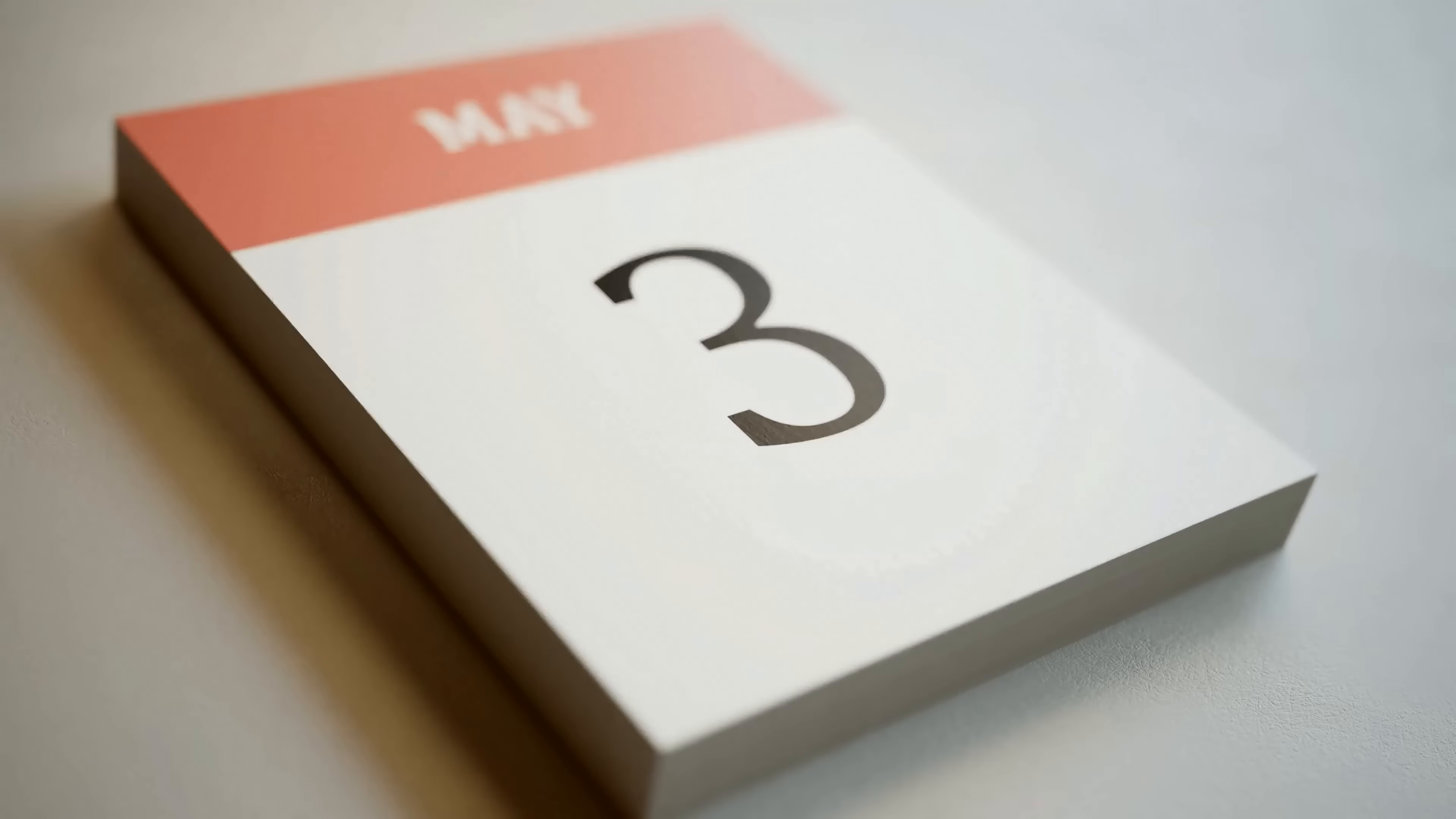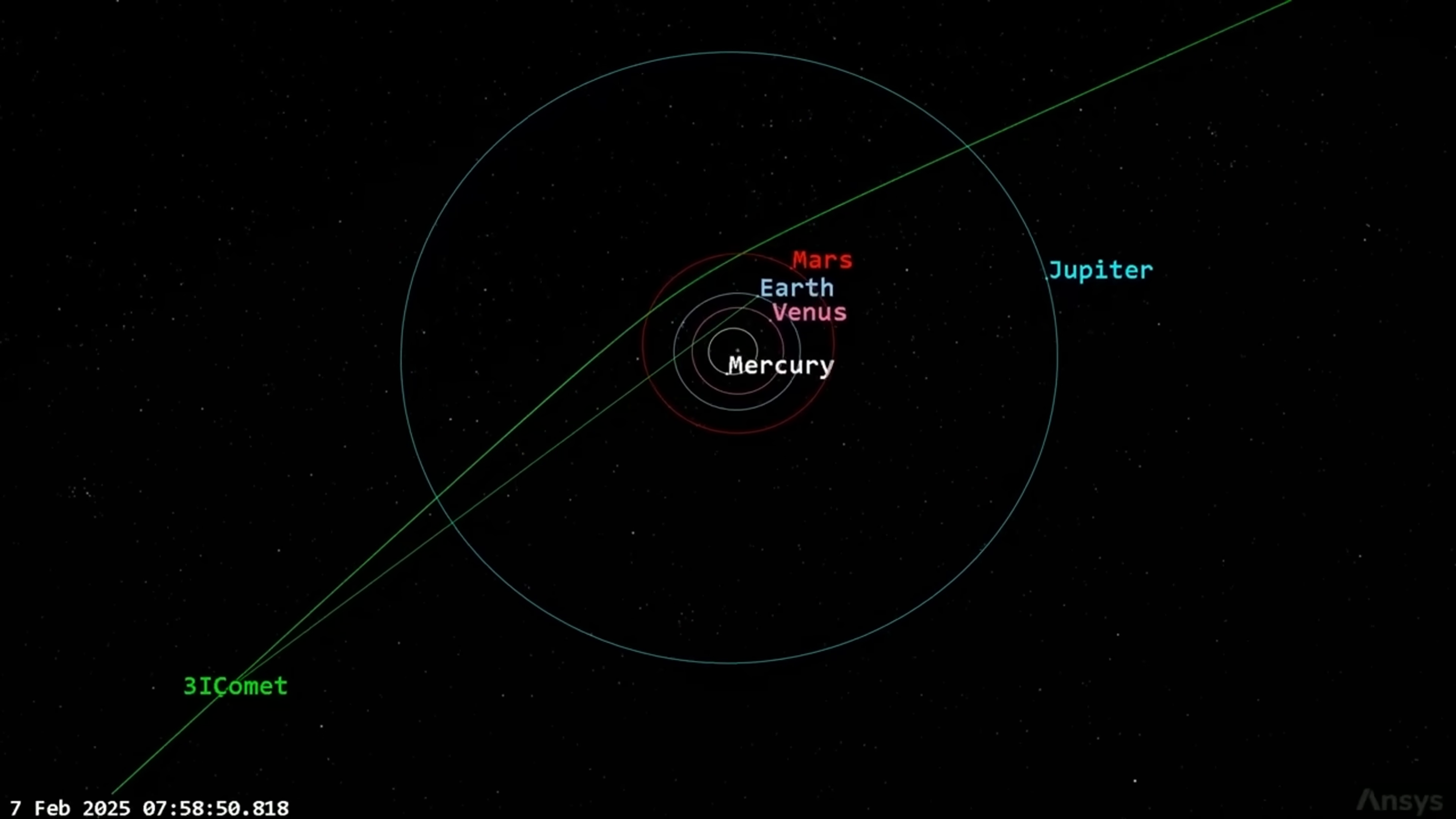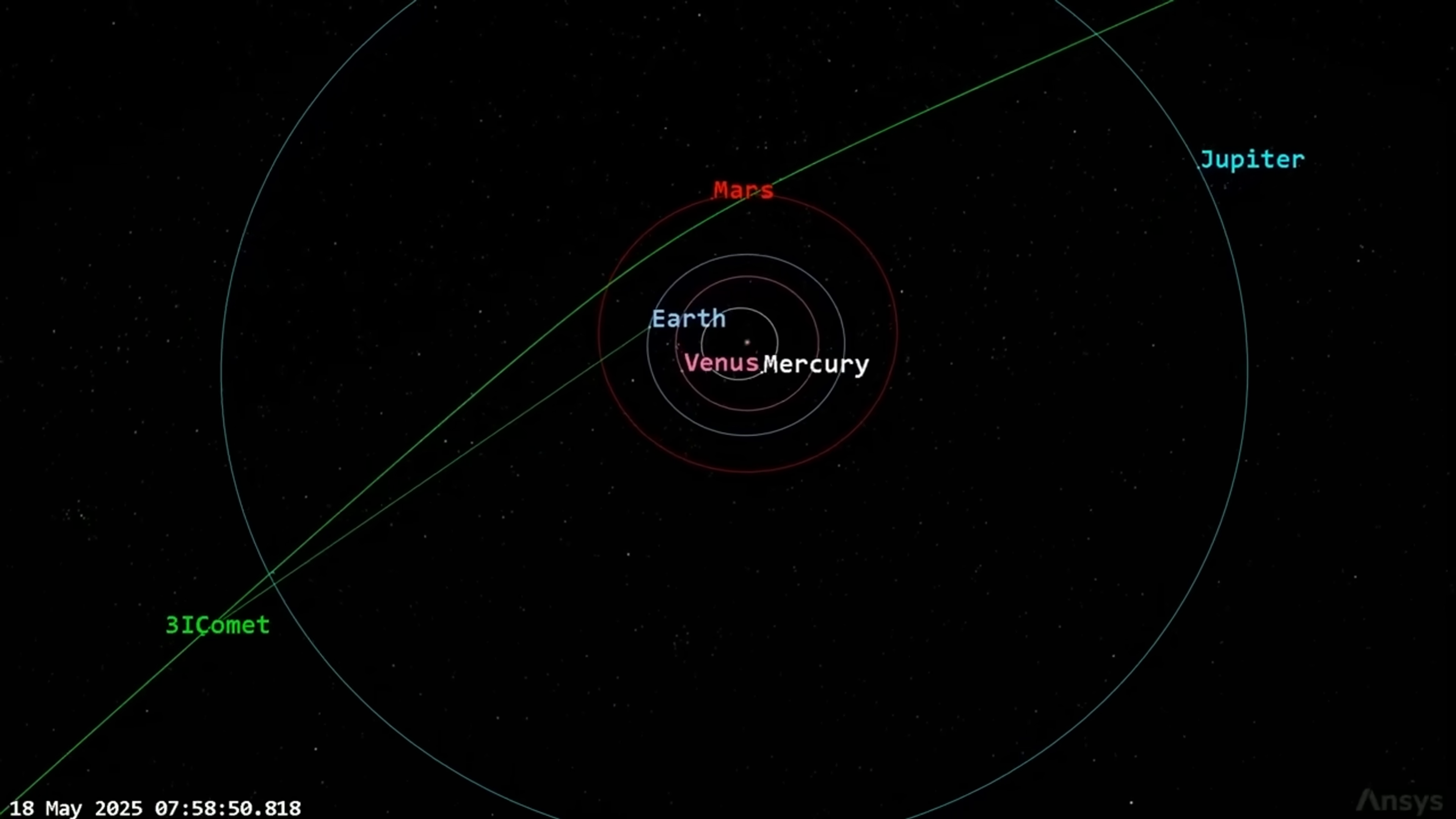A recent paper led by Harvard astronomer Avi Loeb and colleagues quantified just how unusual this steadiness is. Between May 15 and September 15, 3i Atlas deviated from its predicted path by no more than 10 to the negative eighth astronomical units per day, equivalent to barely one and one-half kilometers.